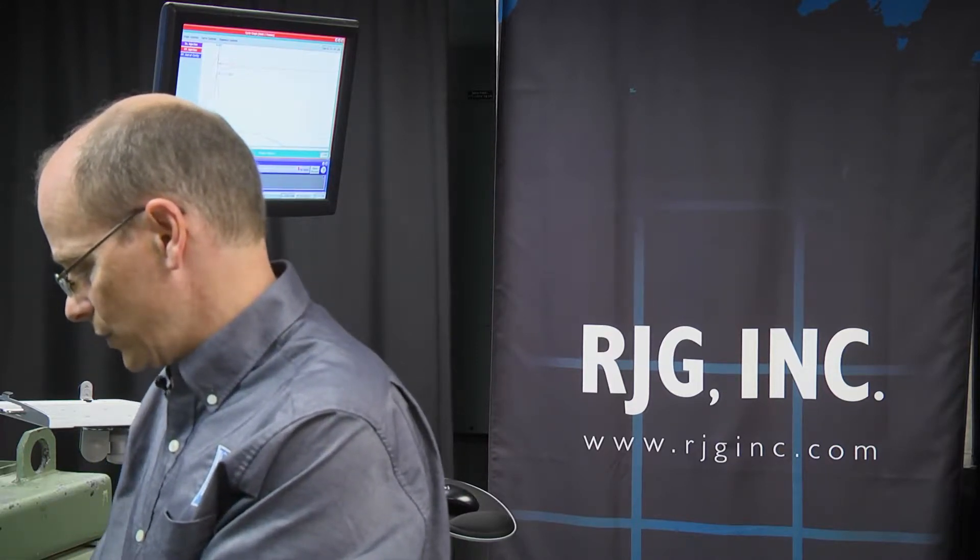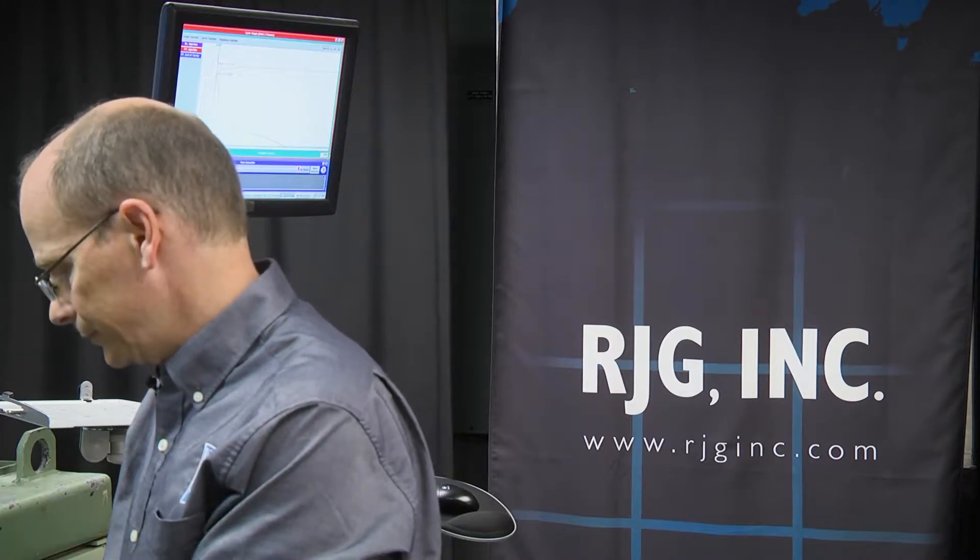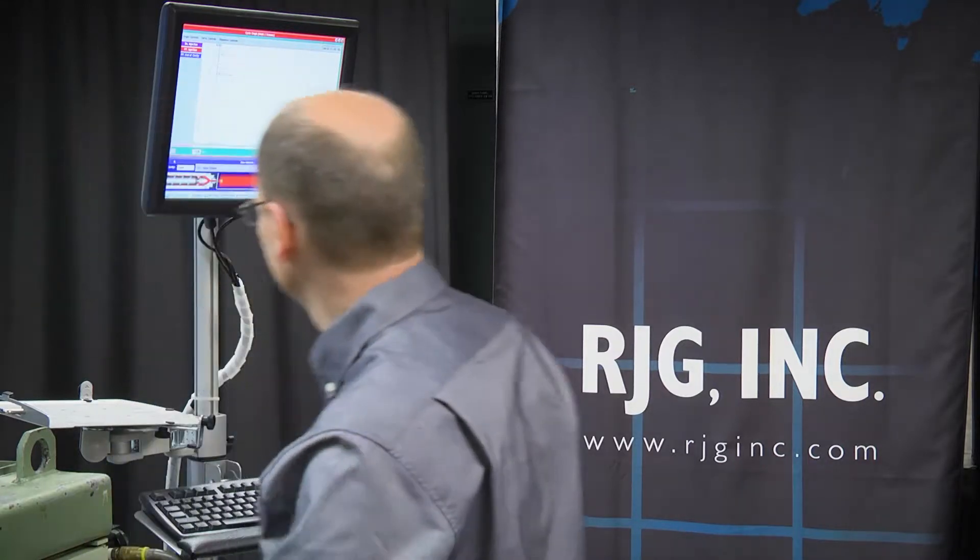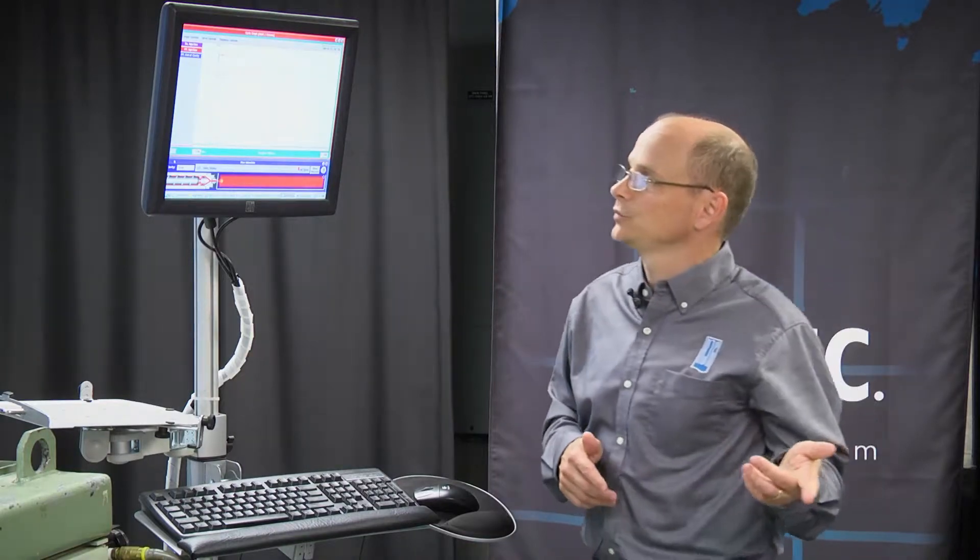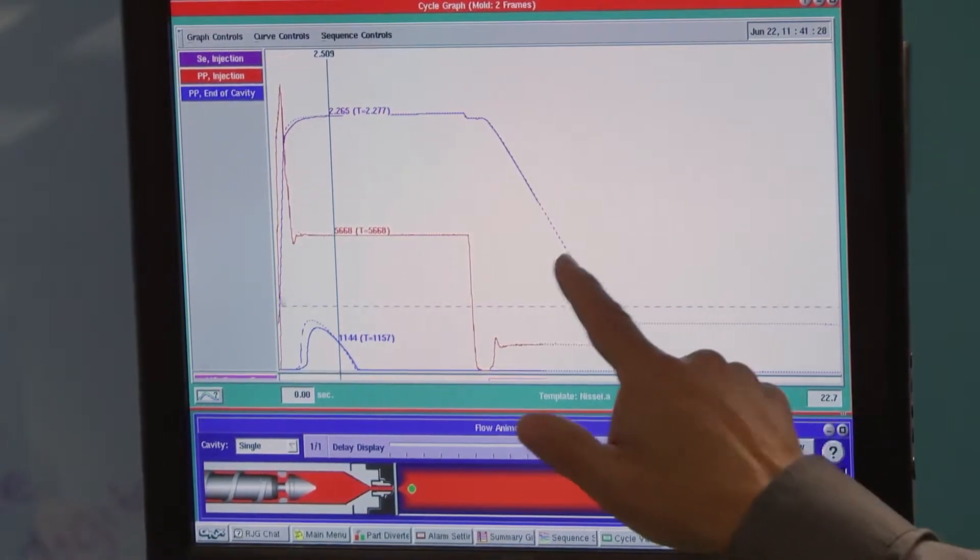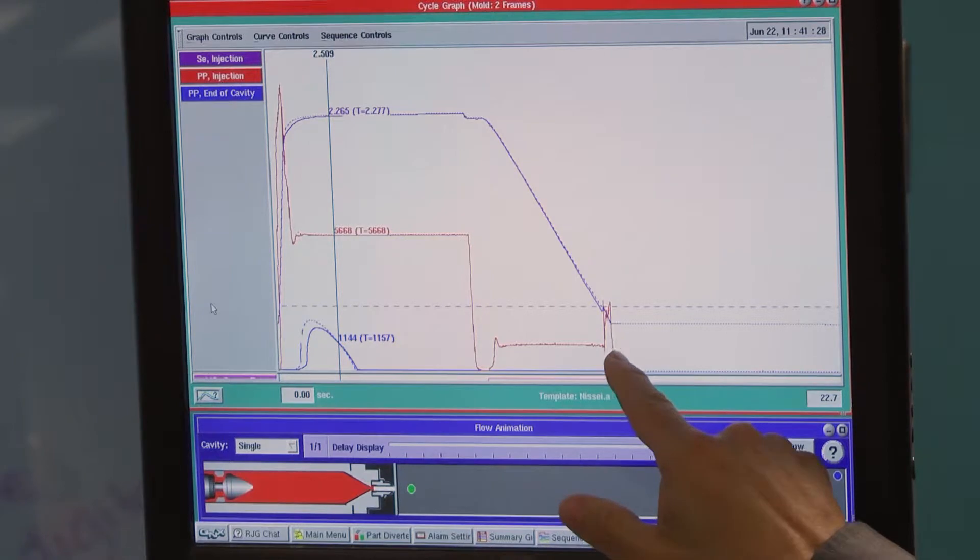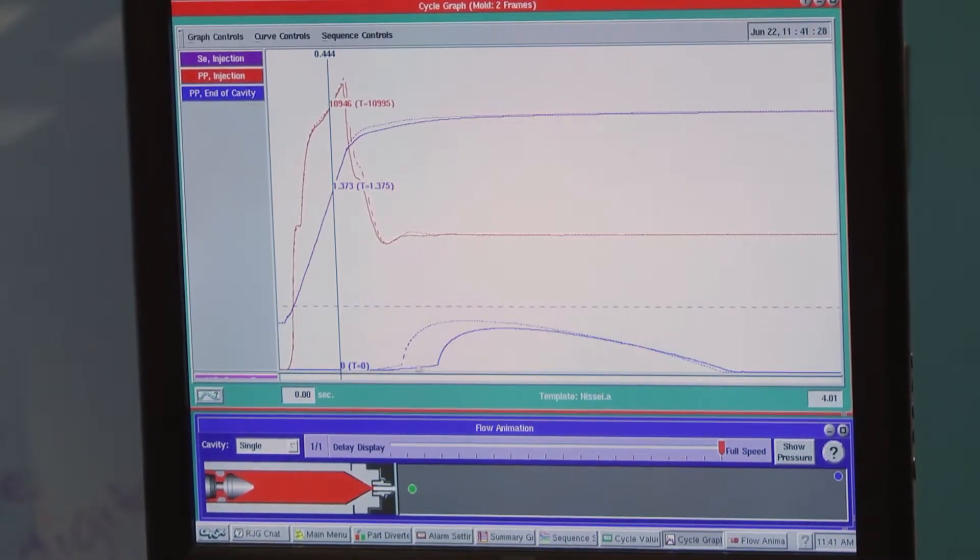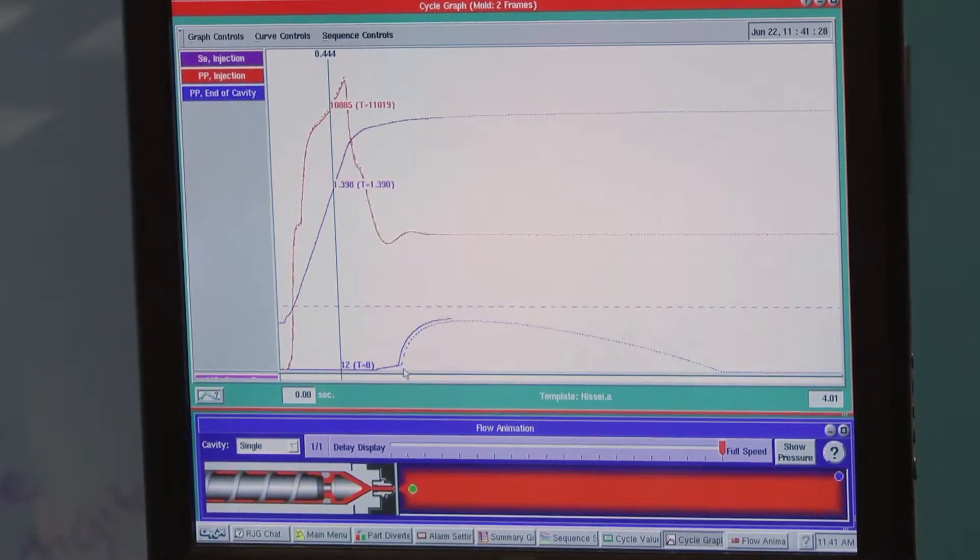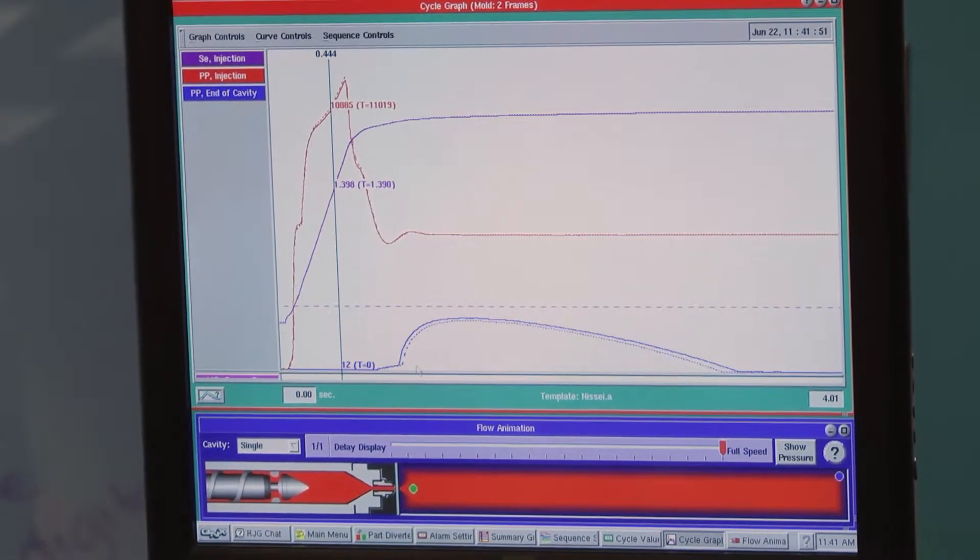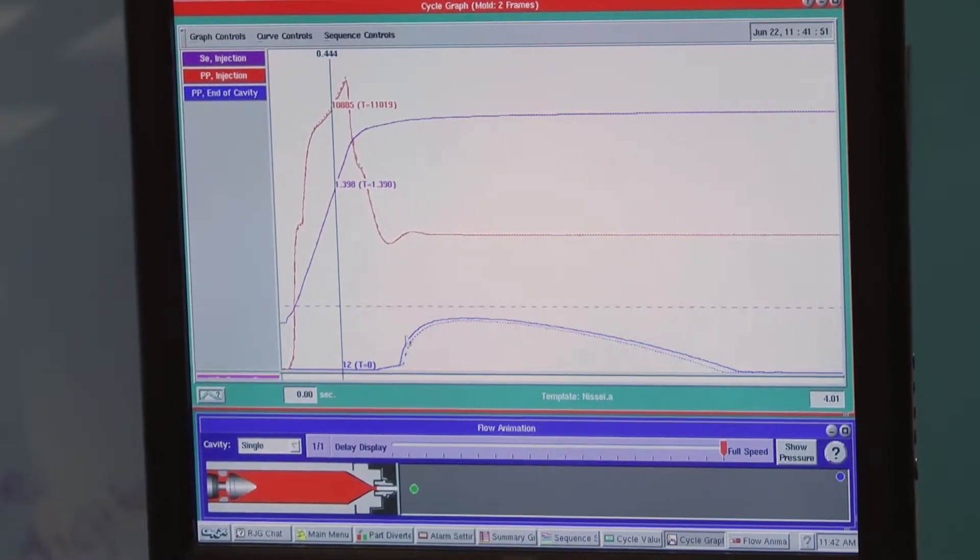There we go. On this next cycle, we're going to build our shot. We've built now to 61.5 millimeters. And now we're matching the cavity fill time much more closely. That's the first key step is matching the cavity fill time.